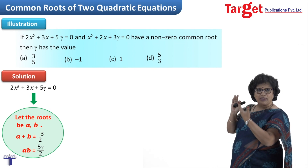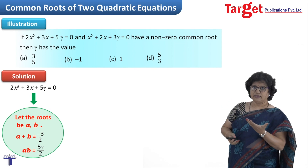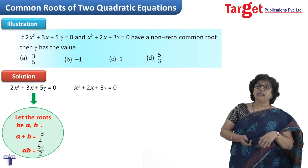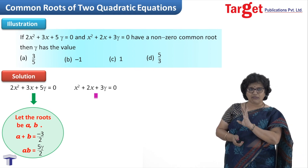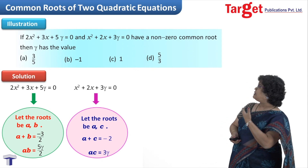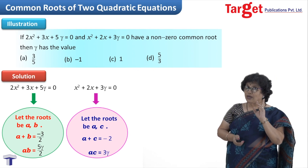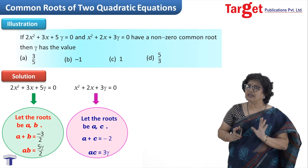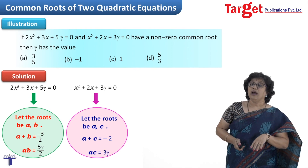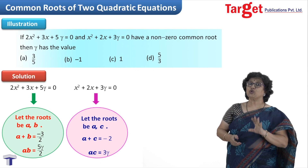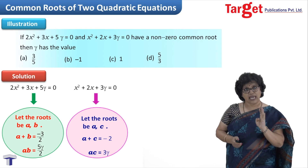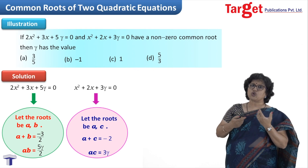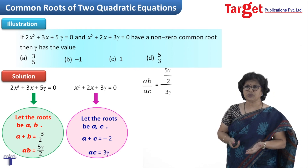From the first equation I can write the sum of roots (α + β) = −3/2 and the product αβ = 5γ/2. I write the second equation x² + 2x + 3γ = 0, and for its roots I keep the common one α and call the other root c (not equal to β). So for the second equation: α + c = −2 and αc = 3γ. I now have four equations in four unknowns: α, β, c, and γ.